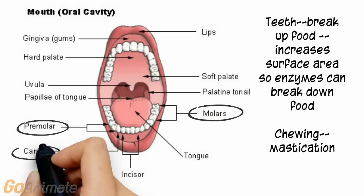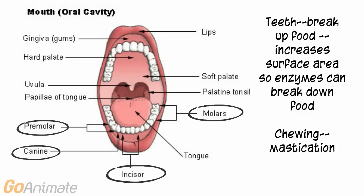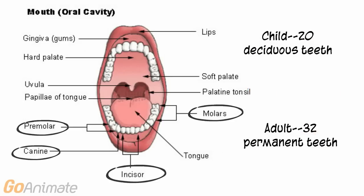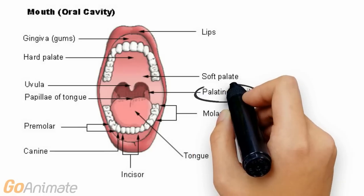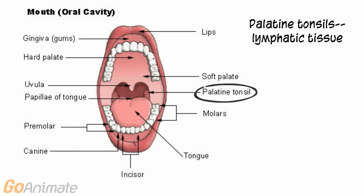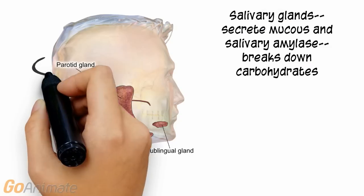The alimentary canal begins in the mouth. Teeth break down food into smaller pieces in a process called chewing or mastication. Types of teeth include molars, premolars, canines, and incisors. Children have 20 deciduous or temporary teeth, while adults have 32 teeth. The uvula, which is part of the soft palate, rises when swallowing. We can also see the palatine tonsils.